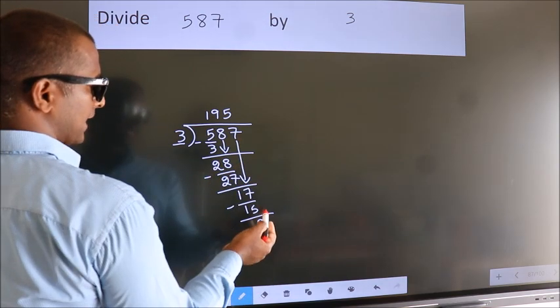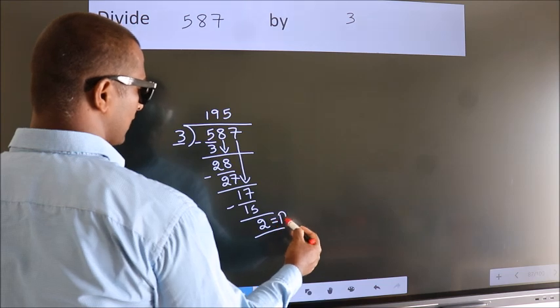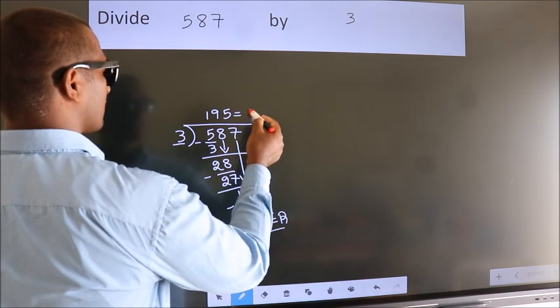No more numbers to bring down. So we stop here. This is our remainder. This is our quotient.